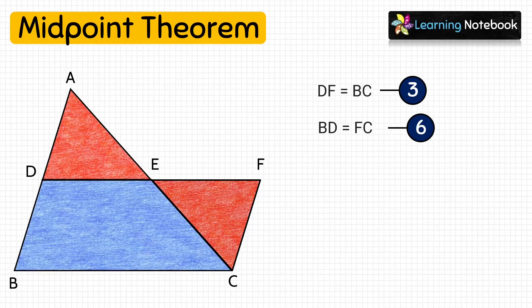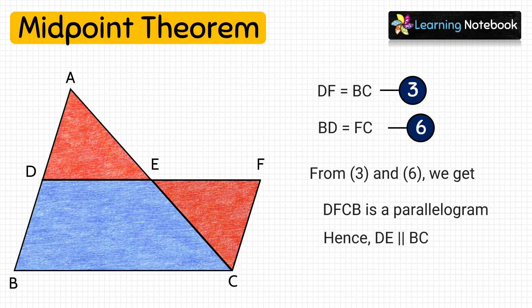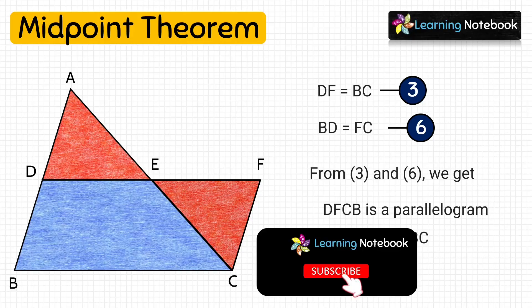So from 3 and 6 we get that DFCB is a parallelogram. Hence, DE is parallel to BC.